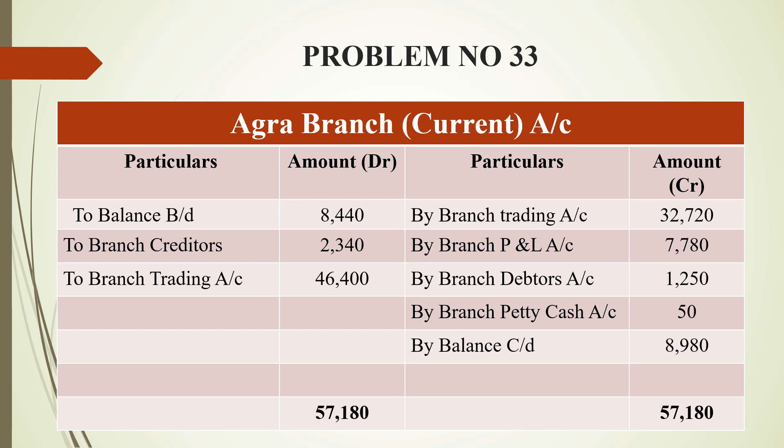By branch profit and loss account, the debit side total of all expenses is 7,780 rupees — cash going outside the business is shown on the credit side. By branch debtors: 1,250 rupees — income not yet received, so shown on the credit side. By branch petty cash account: 50 rupees. The closing balance carried down is 8,980 rupees. The grand total on both sides is 57,180 rupees.